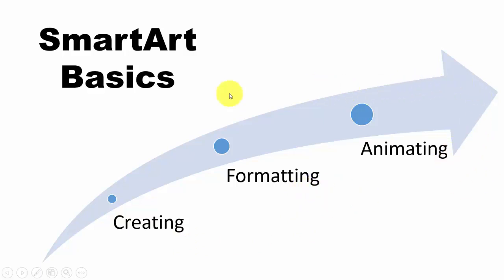What is SmartArt? This image here is one type of SmartArt. It basically not only lists words from your presentation, it also shows a relationship between words. You can see a step-by-step process going from creating, to formatting, to animating — starting small and getting bigger. SmartArt communicates the relationship between words, not just the words themselves.